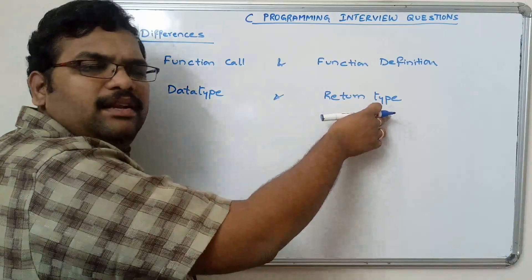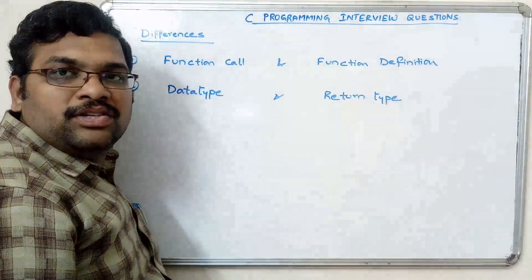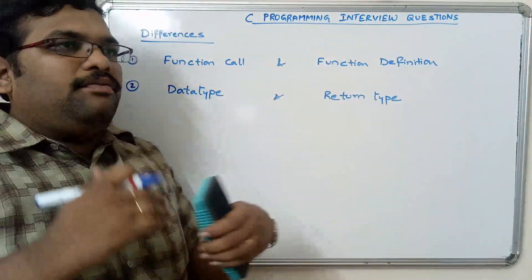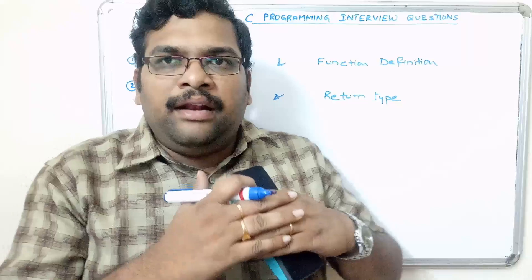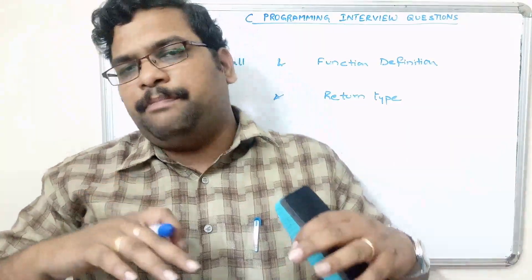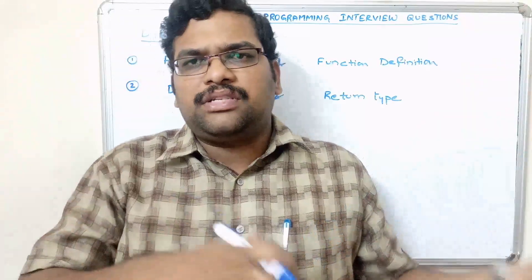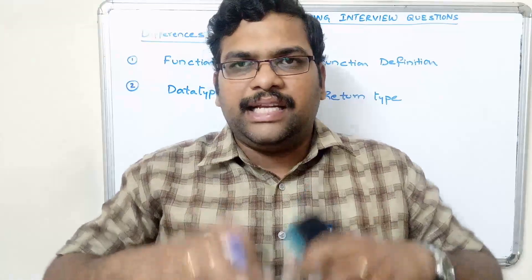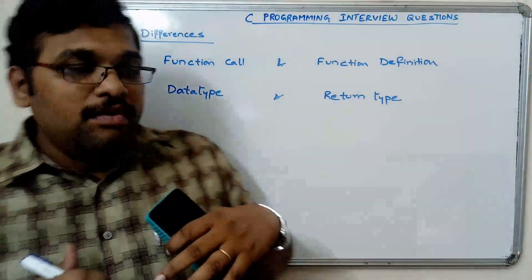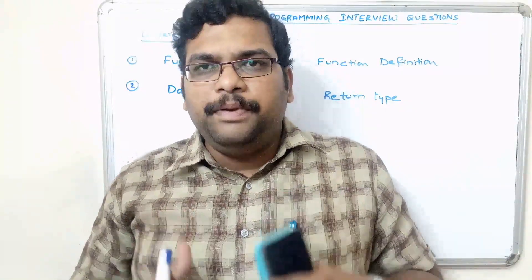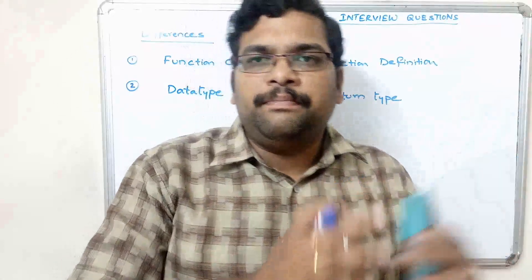The next concept is return type — a word we see in the functions concept. First, we write the function declaration, then the reference of the function definition inside the parent function, which may be the main function or some other user-defined function. The function definition is written outside, and that is where we write the logic. Every user-defined function should report back to its parent function.